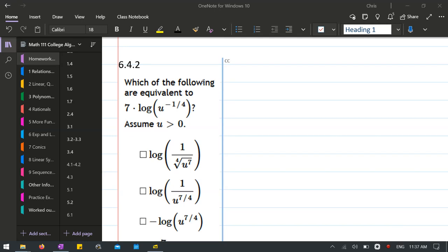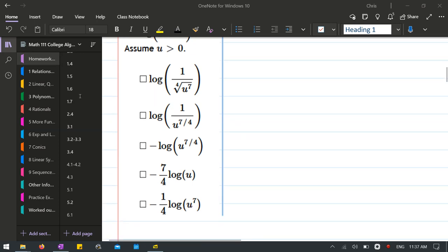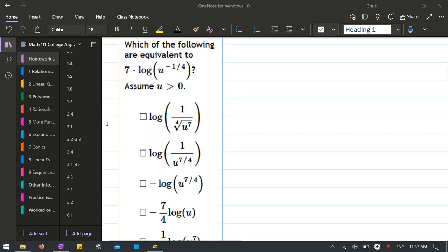We're going to look at equivalent logs here. In this problem we have mostly coefficients outside and we need the log property that deals with a coefficient or multiplication by a constant outside.